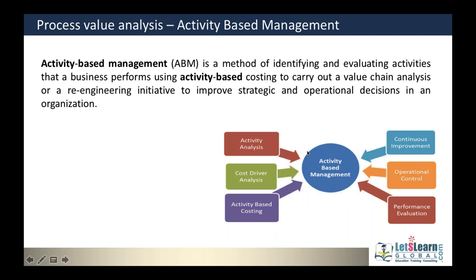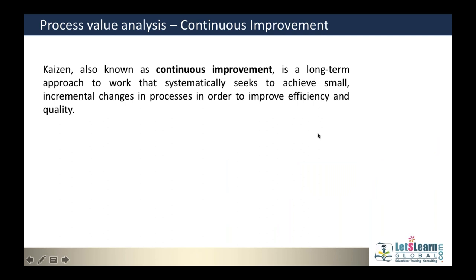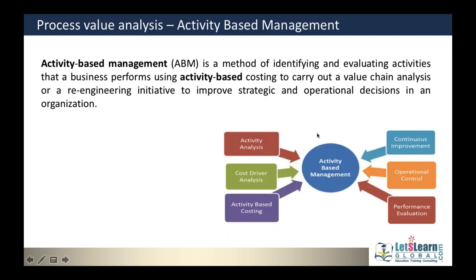Activity-based management (ABM) is a concept where each activity is identified and evaluated — whether it is worth carrying out or can be improved efficiently — so that money is spent accordingly. ABM is of two types: operational and strategic. Operational ABM concentrates on the short term — how to improve operations now — whereas strategic ABM is a long-term process focused on expansion and market share.